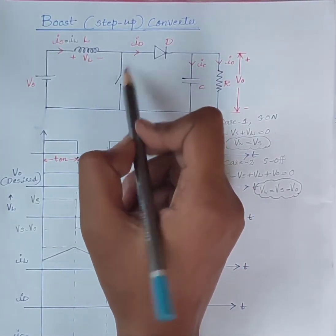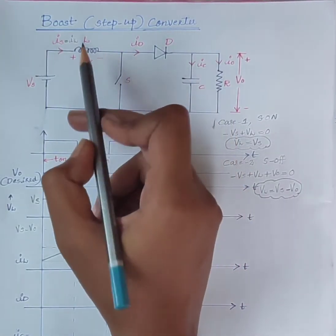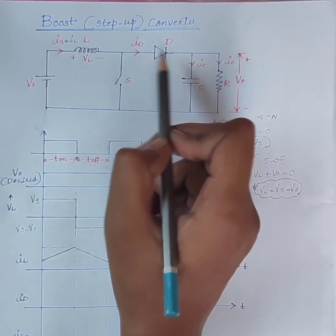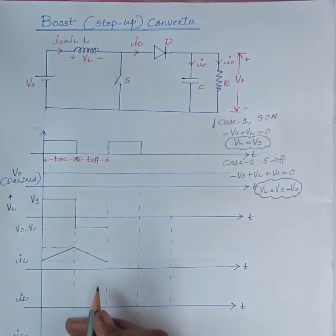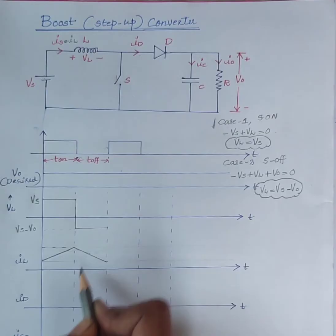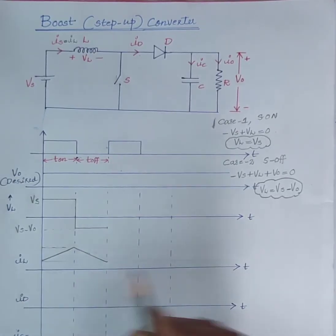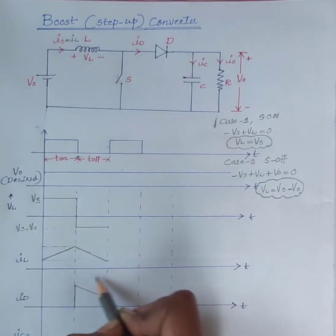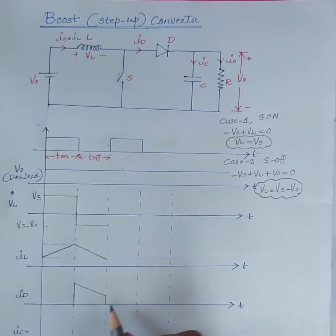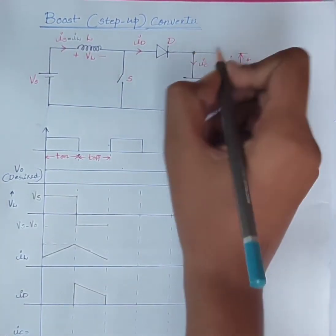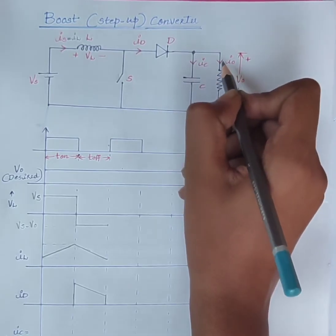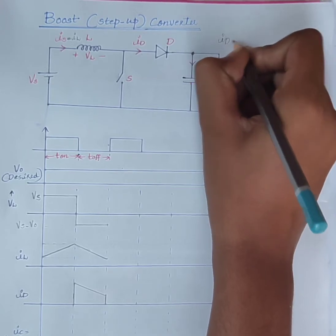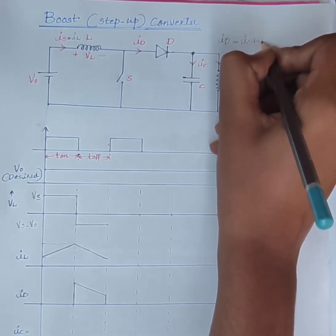When the switch is off, Il is equal to Id, where Id is the current through the diode. Therefore, during this interval, Id is equal to Il. The diode current Id divides into Ic and I0. Applying node analysis, we get: Id is equal to Ic plus I0.